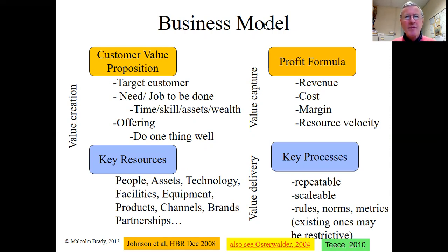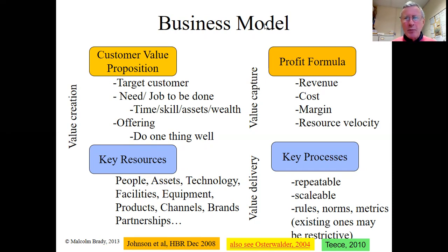This model has four elements. The starting one is the customer value proposition. You're looking at: who is the customer, what's the target customer group or ideal customer, what need do they have or what job needs to be done — saving them time, providing a skill, or some other method of providing value. Otherwise they won't want your offering. They recommend doing one thing well rather than multiple things poorly — concentrate on doing one thing well. That's the customer value proposition: who is your customer and what do they need done.